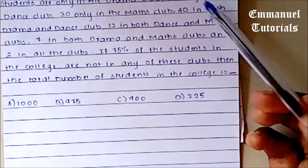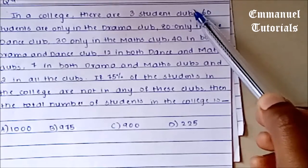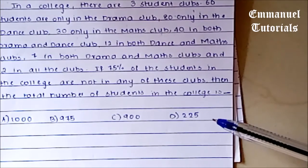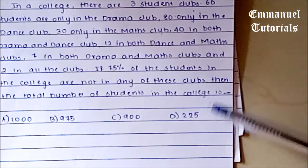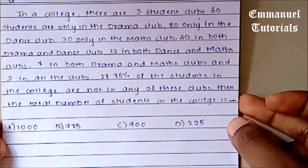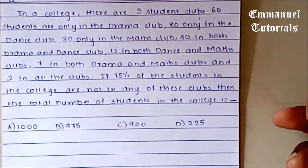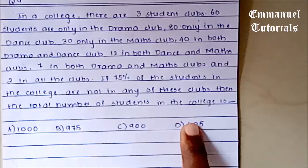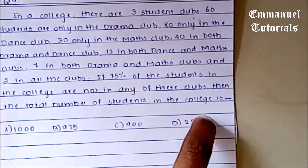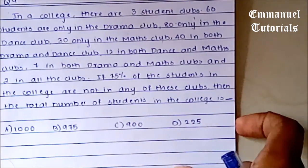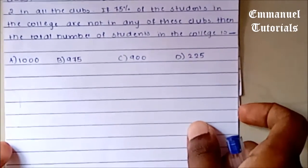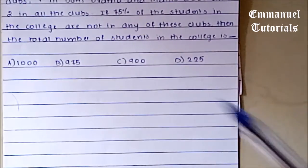This means students who are in any of these clubs contribute to only 25% of the total number of students in the college. The remaining 75% are not in any of these clubs. So what we are supposed to find is the total number of students in the college. We will try solving it using a Venn diagram.